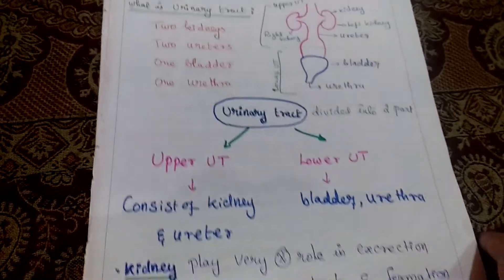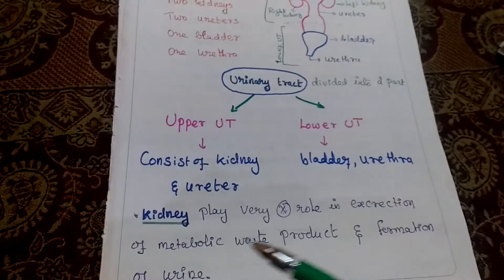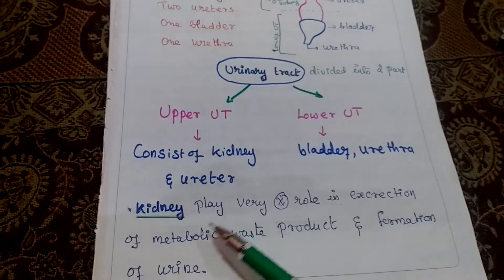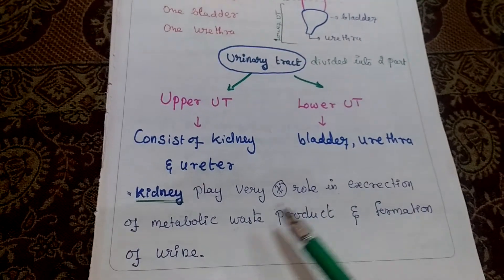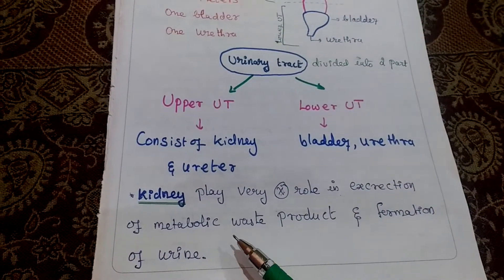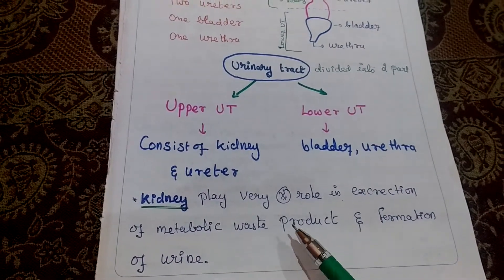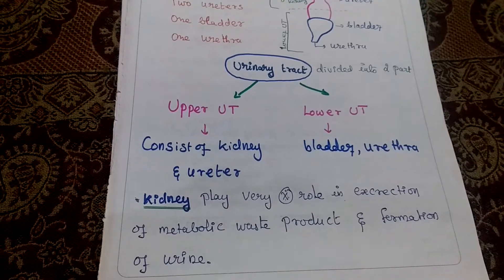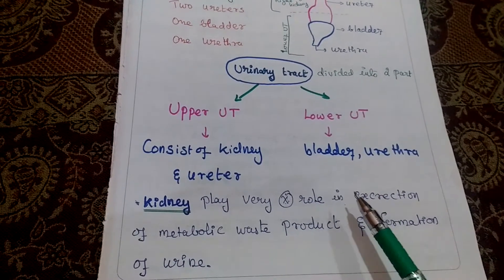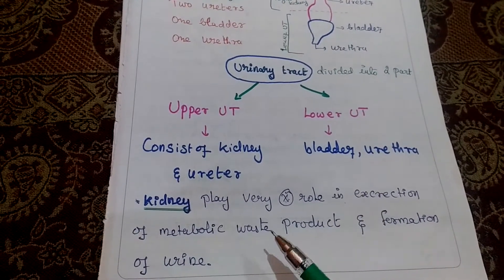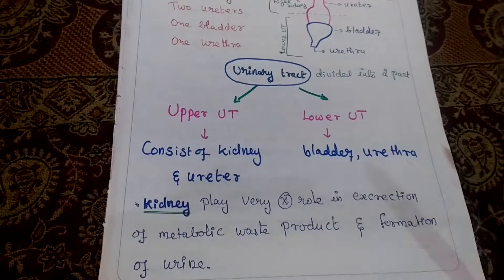Now we look at the function of each of those 4 parts. First, the kidney. The kidney plays an important role in excretion of metabolic waste products and formation of urine.